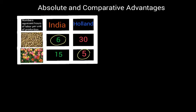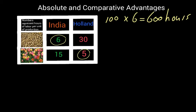Let's say that India chooses to produce 100 additional bushels of soybeans. 100 bushels at six hours per bushel means India is going to spend 600 hours on the bushels. Since they're at full employment, they would have to cut back on the other product — the tulips they were previously producing. To free up that same 600 hours, and since it costs 15 hours to make one case of tulips, they would have to give up 40 cases of tulips.